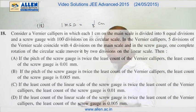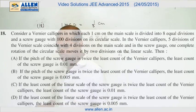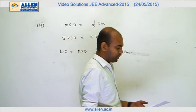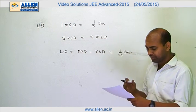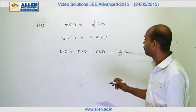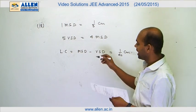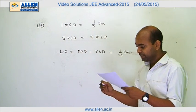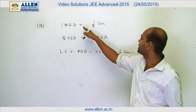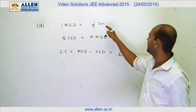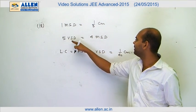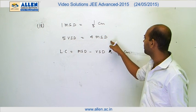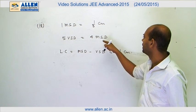Question 18 is a tricky question about Vernier calipers and screw gauge measurement. They have given that Vernier calipers have one centimeter with eight main scale divisions, so 1 MSD equals 1/8 centimeter. They have also given that five Vernier scale divisions equal four main scale divisions.